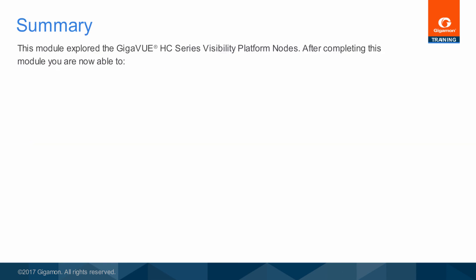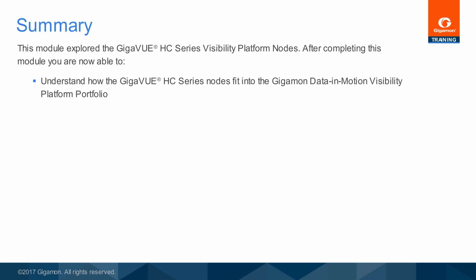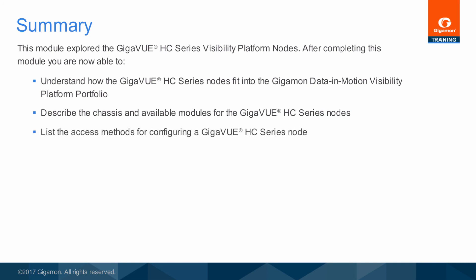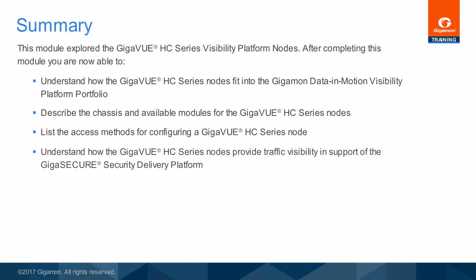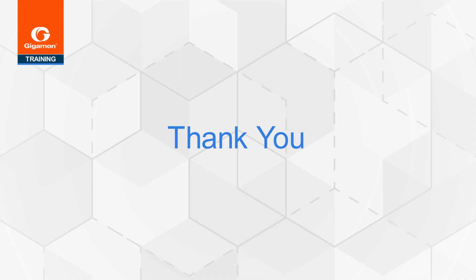This module explored the Gigaview HC series visibility platform nodes. After completing this module, you are now able to understand how the Gigaview HC series nodes fit into the Gigamon Data in Motion Visibility Platform Portfolio, describe the chassis and available modules for the Gigaview HC series nodes, list the access methods for configuring a Gigaview HC series node, and understand how the Gigaview HC series nodes provides traffic visibility in support of the Gigasecure Security Delivery Platform. This completes the Gigaview HC product family training module. Thank you.